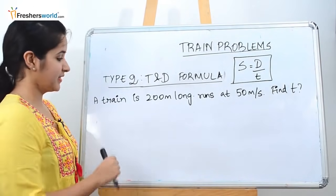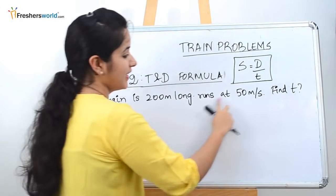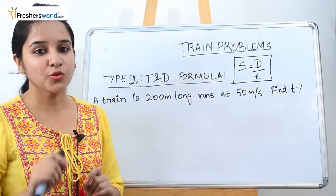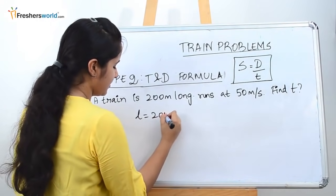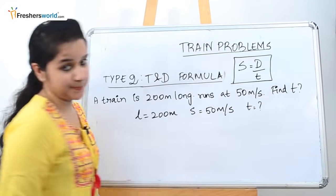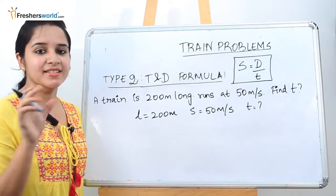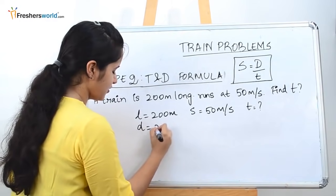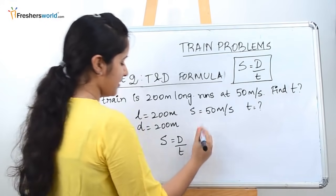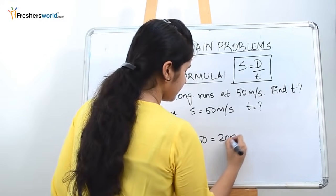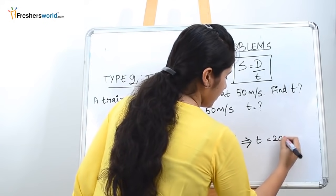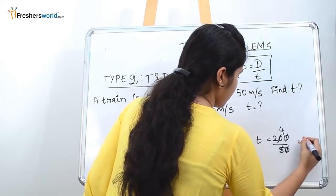The question: a train is 200 meters long and runs at 50 meters per second. What time does it take? Always write the given data so you don't make mistakes. Length = 200 meters, speed = 50 meters per second, and they are asking for time. Length is nothing but the distance covered by the train, so D = 200 meters. Using speed = distance/time: 50 = 200/time, so time = 200/50 = 4 seconds.